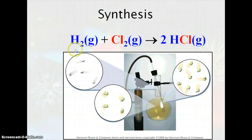Here's an example. So you have hydrogen gas and chlorine gas. They combine together to make hydrogen monochloride, also known as hydrochloric acid gas.